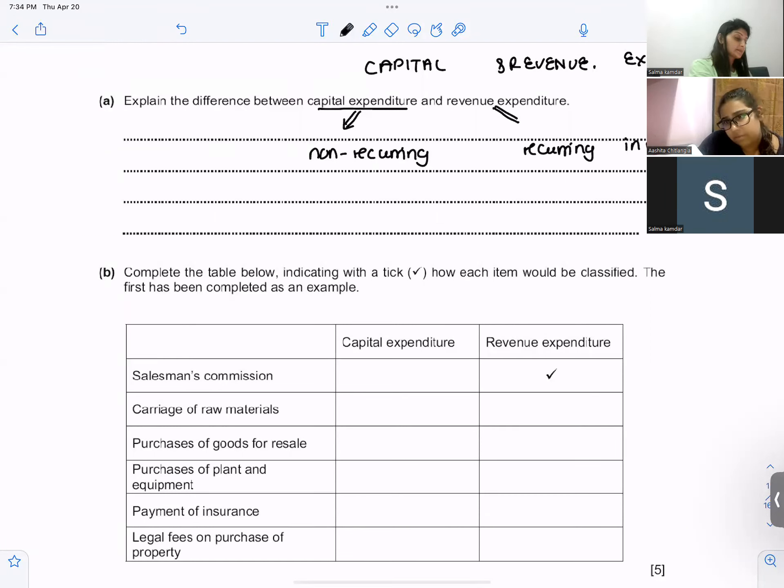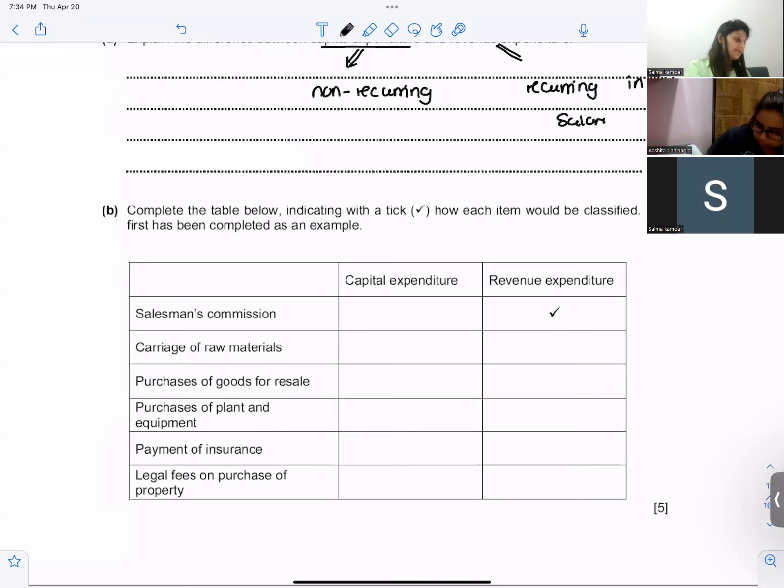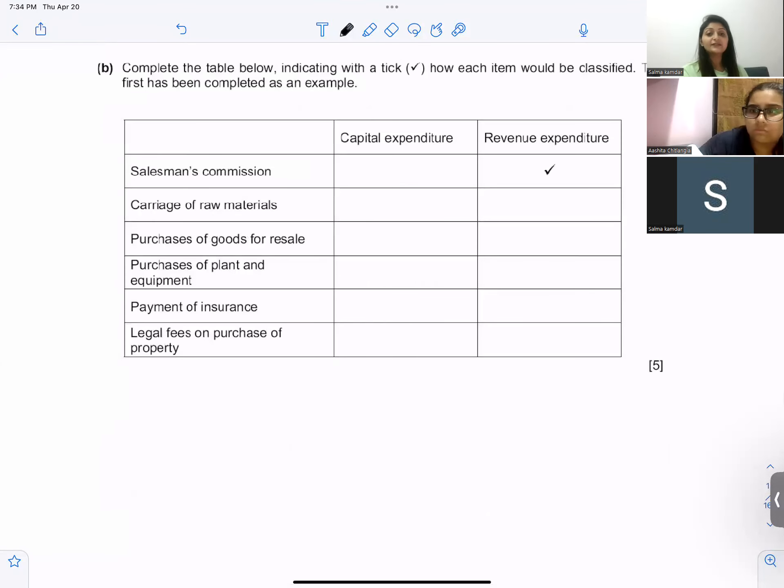Very good. Okay, let's classify into capital and revenue. Carriage of raw materials is revenue. Purchase of goods for resale is revenue. Purchase of plant and equipment is capital.